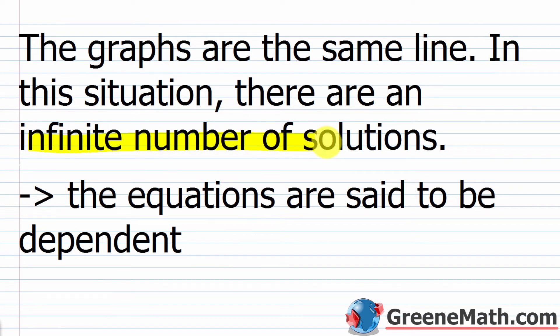You might wonder what it means for the graphs to be the same line. What happens is you start with two equations that look different, but it's really the same equation algebraically manipulated. The way to guard against this is to put everything in slope-intercept form — that tells you right away if you have a special case. These equations are said to be dependent.